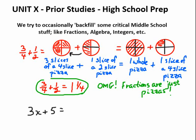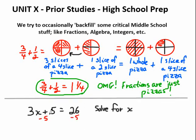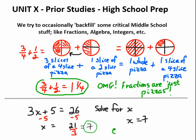We'll also do some algebra — for example, if three hot dogs plus a $5 bottle of Coke equals $26, how much does one hot dog cost? That's called solving for X. Take away the $5, so three X's must equal 21. Divide both sides by 3, and X equals 7. Don't forget to check your answer: three times seven plus five is 26.